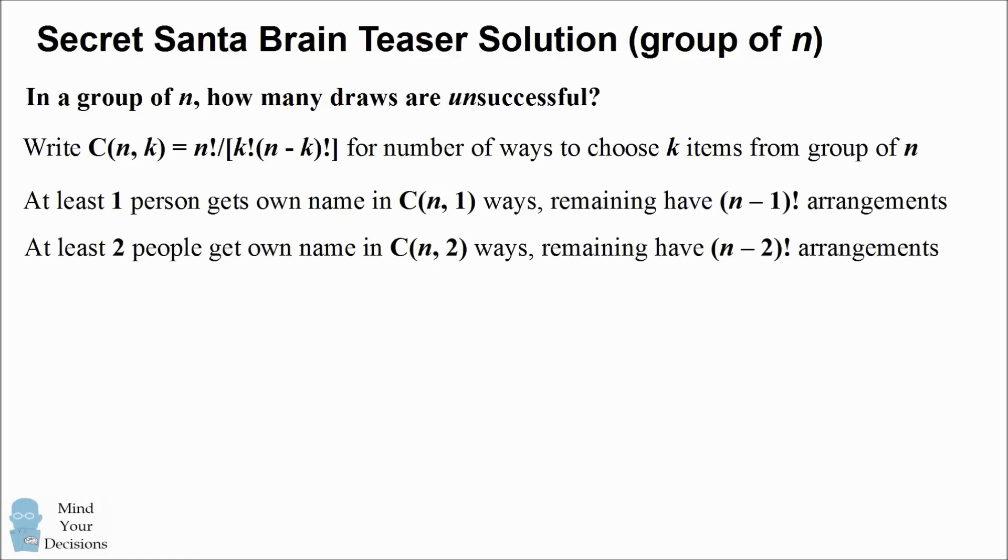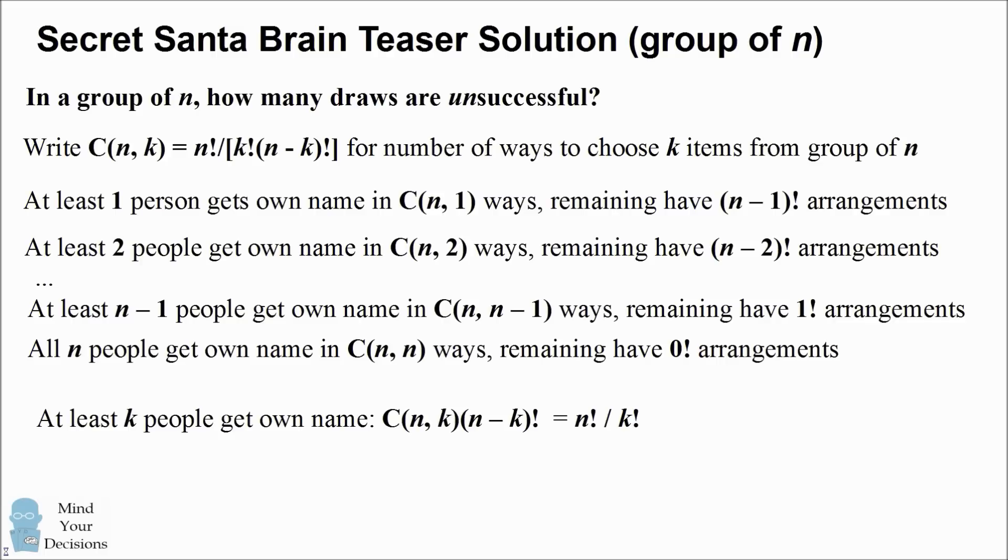Similarly, you can count the number of ways at least two people get their own name. There are n choose two ways to pick those two people, and the remaining n-2 people can be arranged in (n-2) factorial ways. So this pattern continues, and in general we can say that at least k people get their own name. We're going to multiply the number of ways of choosing those k people, which is n choose k, times the number of ways to arrange the remaining possibilities, which is (n-k) factorial. So when you simplify this formula, you get n factorial divided by k factorial. And we're going to keep that formula.